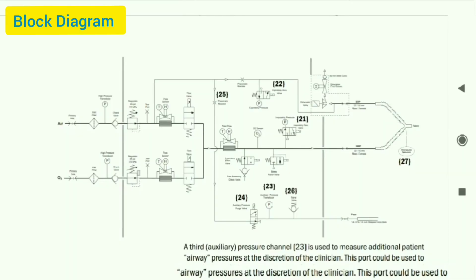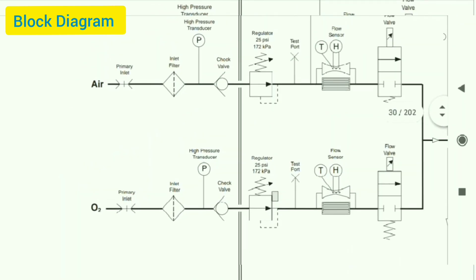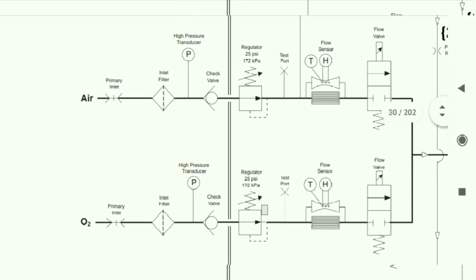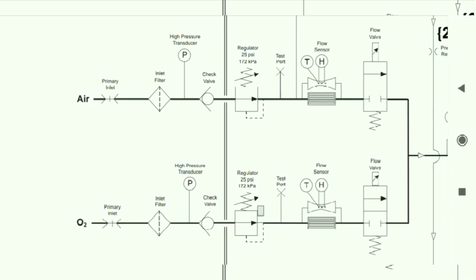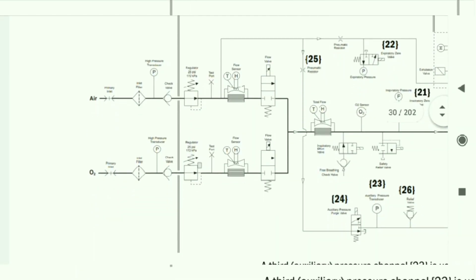Starting from the inputs — air and oxygen are supplied to the ventilator. There are primary inlets for both air and O2. After the inlet filter, there is a high-pressure transducer for both air and O2, then a check valve, then a regulator bringing pressure down to 25 PSI. After the regulator there is a test port and a flow sensor to check the inlet pressure of air and O2. If the pressure is low or high, the ventilator will give an alarm. From there, there is a flow valve in both the air and O2 lines.